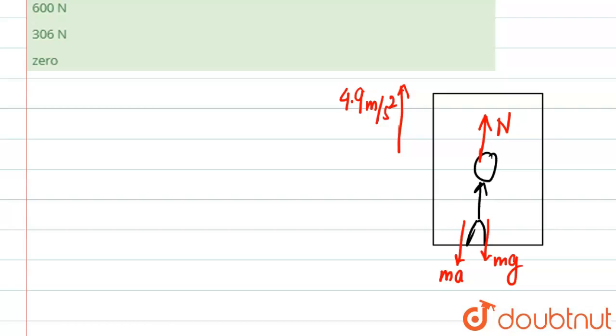What you see here is the weight of the man will be equal to the normal force, which is equal to mg plus ma. Since the lift is going up, that's why we include this pseudo force.